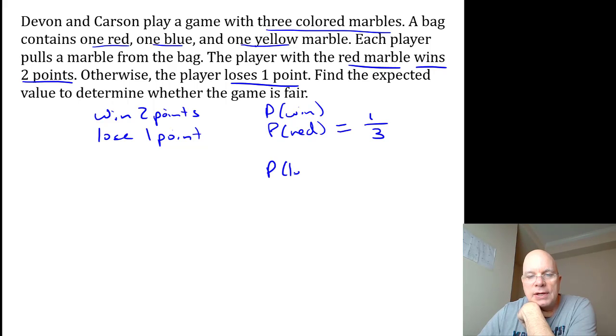The probability of losing is the same as the probability of getting the blue or the yellow, but it's also the complement of winning. So the probability of blue or yellow, or the probability of losing, is two-thirds.